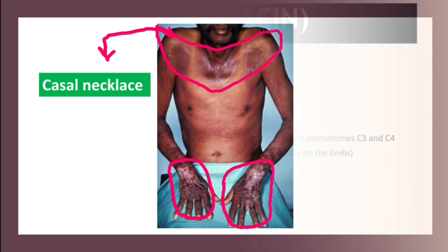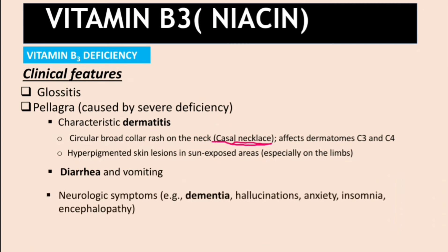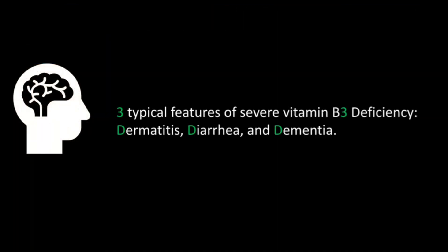The skin distribution is called Casal's necklace. The second feature of pellagra is diarrhea, sometimes with vomiting. The third is neurological symptoms including dementia, hallucinations, anxiety, insomnia, and encephalopathy. These three features — dermatitis, diarrhea, and dementia — are remembered as the 3 D's. Including death, this becomes the 4 D's. The mnemonic 'three typical features of Vitamin B3 deficiency' also works.